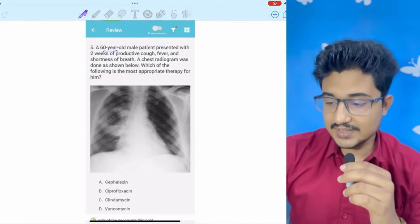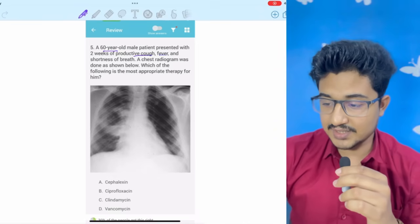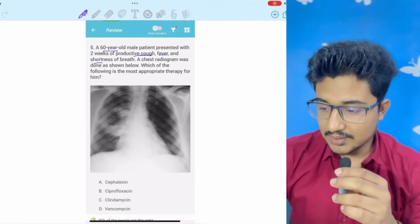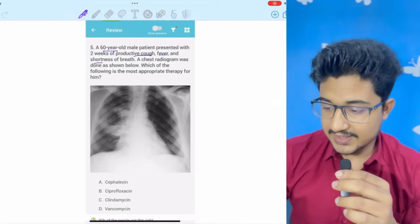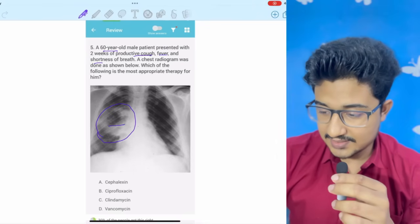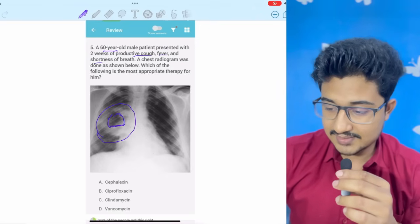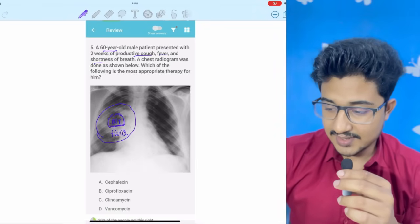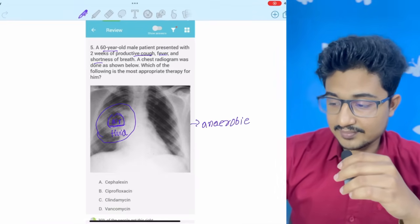So, let's start with the first question. In the question, a 60-year-old male patient with two weeks history of productive cough, fever and shortness of breath, may be a case of pneumonia. A chest X-ray radiogram was shown below, which of the following is the appropriate therapy. Now, in the radiograph, what main thing we can see is that here is an abnormality. Here, we can see there is an air fluid level because this is opaque and this is radiolucent. So, this is the air and this is the fluid.